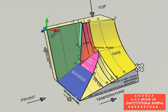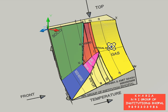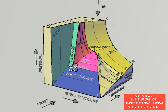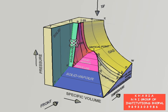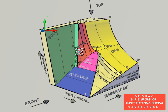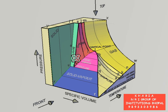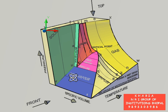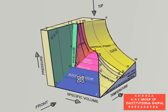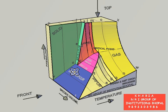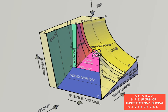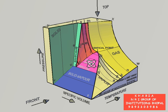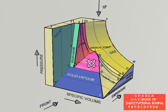The yellow colored surface KNWXOMLK indicates various possible equilibrium states of the pure substance in the two-phase solid-liquid region. The dark blue colored surface RQUVR indicates various possible equilibrium states of the pure substance in the two-phase solid-vapor region. The pink colored surface QBHLICPQ indicates various possible equilibrium states in the two-phase liquid-vapor region.